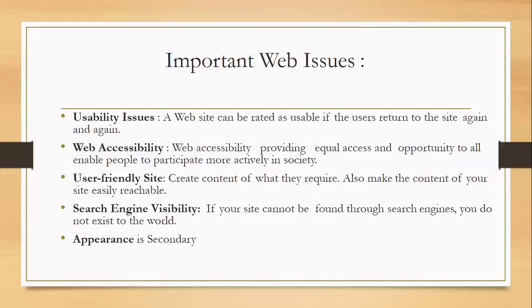Appearance is always a secondary concern. Even if a website has many images and effects, if the content is poor, users will stop at the first or second page and go elsewhere. So all the primary elements — usability, accessibility, user-friendliness, and search engine visibility — must be addressed first.